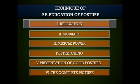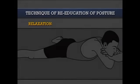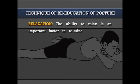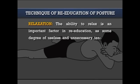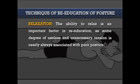The first technique is relaxation. The ability to relax is an important factor in re-education, and some degree of useless and unnecessary tension is nearly always associated with poor posture. General relaxation with the body in a horizontal position reduces muscular tension and gives a feeling of alignment. Voluntary relaxation of specific muscle groups can then be taught, so the patient learns to recognize tension and relax at will during maintenance of either static or dynamic posture.